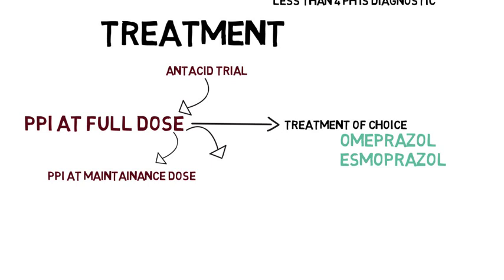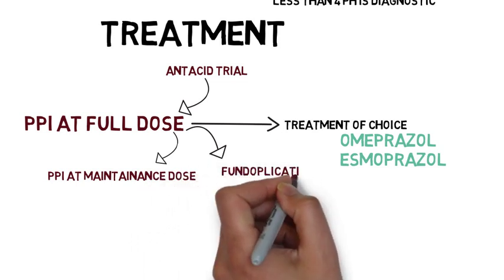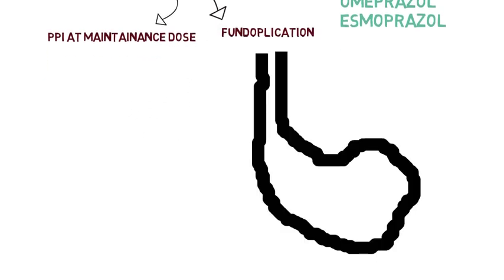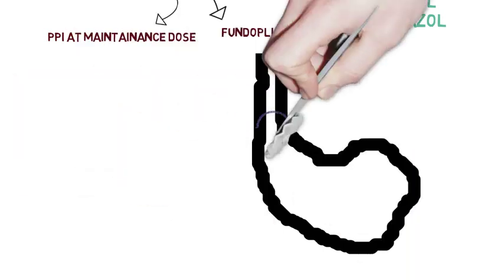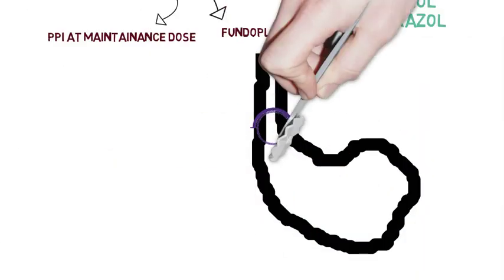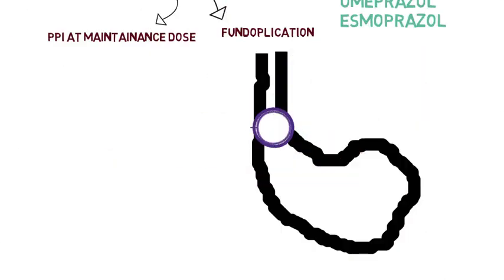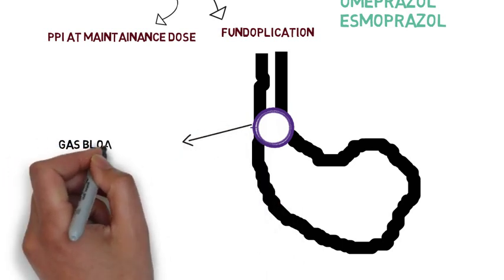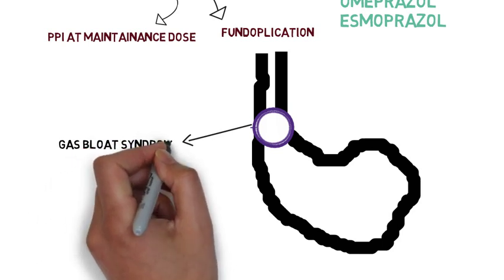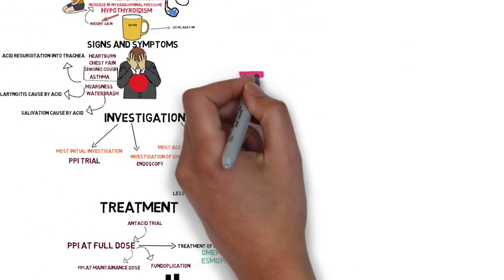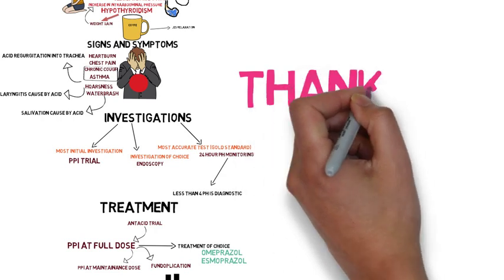But if the patient is not showing good results, go for surgical procedure, that is fundoplication. In this fundoplication, you have to fuse the stomach with esophagus so that GERD will not occur. But the side effect of this surgery is gas bloat syndrome, in which the person is unable to belch. So that's all about GERD. Thank you.